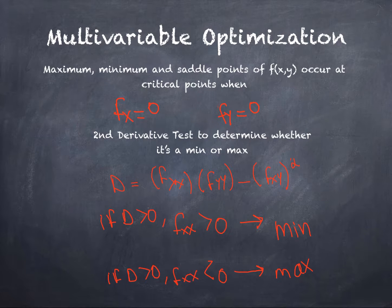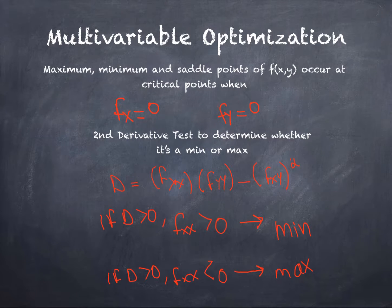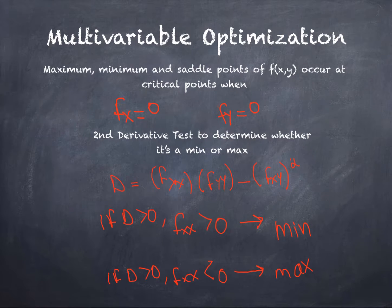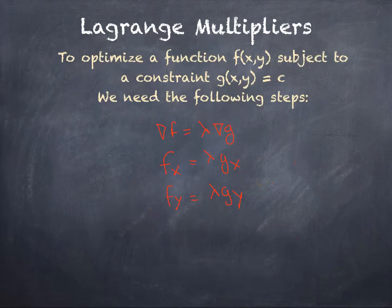If the determinant is bigger than zero, then we can check the second derivative. If the second derivative with respect to x is bigger than zero then we have a minimum, and if the second derivative with respect to x is less than zero then we have a maximum.